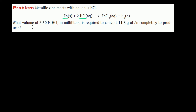The problem asks: what volume of 2.5 molar hydrochloric acid, in milliliters, is required to convert 11.8 grams of zinc completely to products?